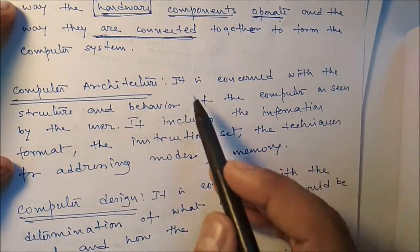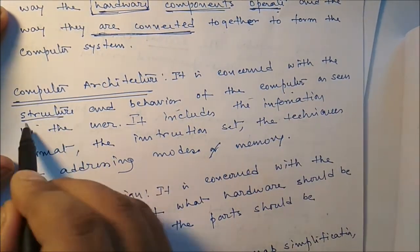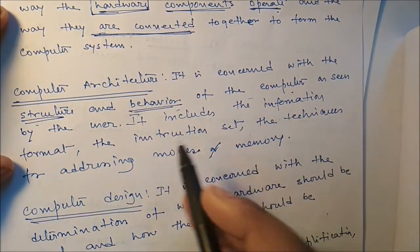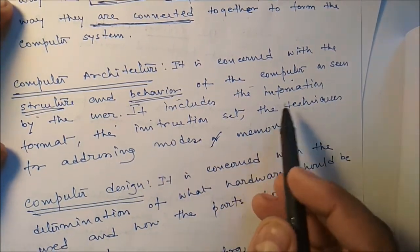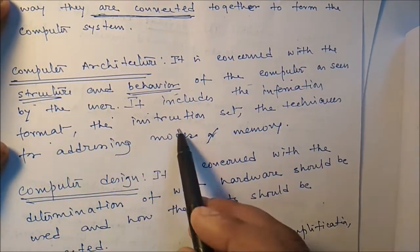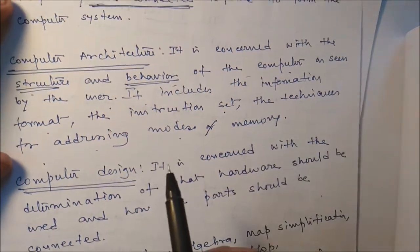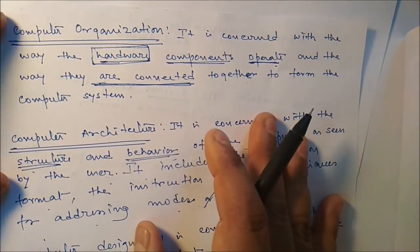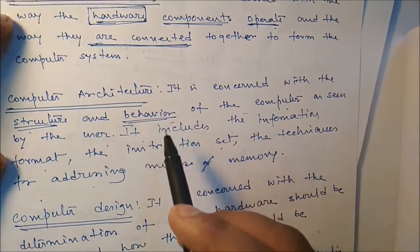Computer architecture is concerned with the structure and behavior of the computer - the more abstract part of the computer as seen by the user. It includes the information format, instruction sets, techniques for addressing modes, memory, etc. Broadly we can say computer organization deals with hardware and computer architecture generally deals with software.